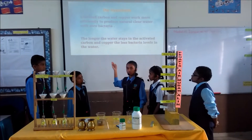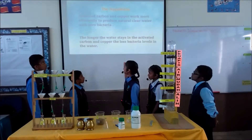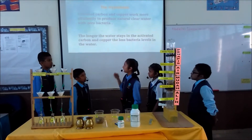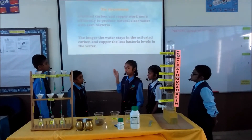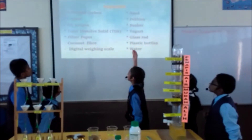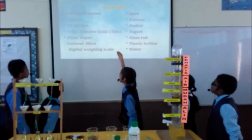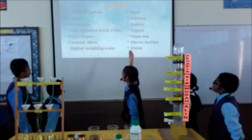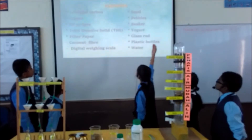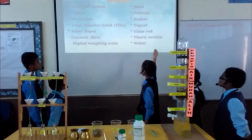According to our experiment, the hypothesis were: activated carbon and copper work more efficiently to produce natural clean water with zero bacteria, and the longer the water stays in the activated carbon and copper, the less bacteria levels in the water. The materials we used in our experiment were: activated carbon, copper, pH strips, total dissolved solid device, filter paper, coconut fiber, digital weighing scale, sand, pebbles, wicker, yogurt, glass rod, plastic bottles, and water.